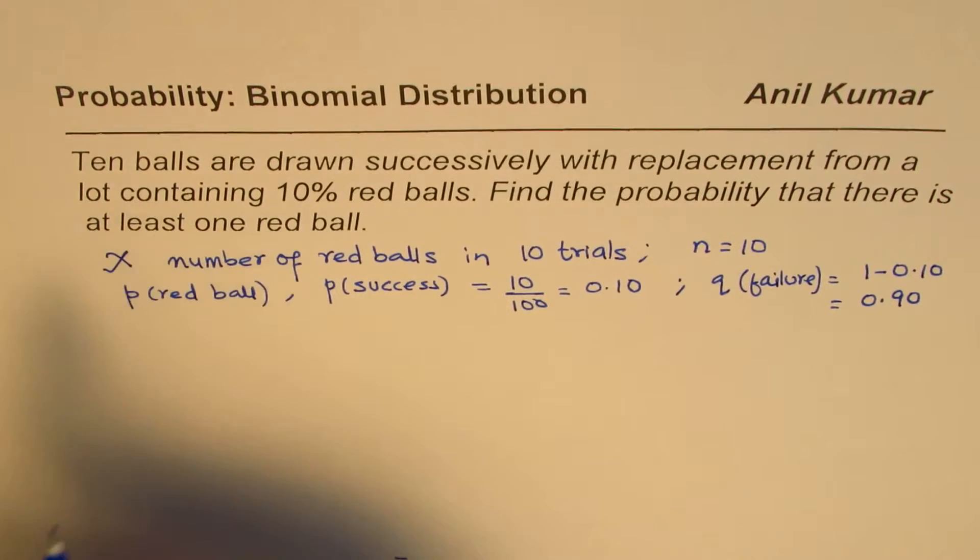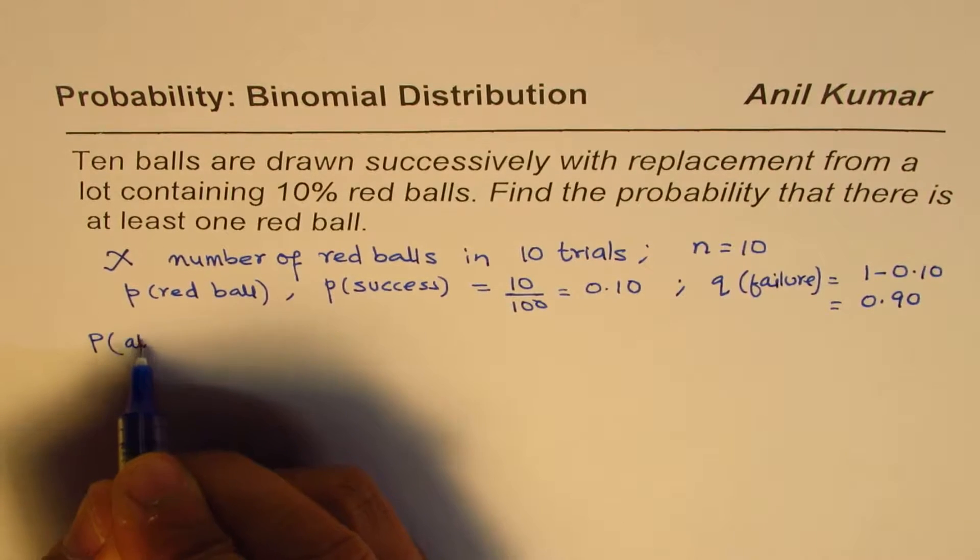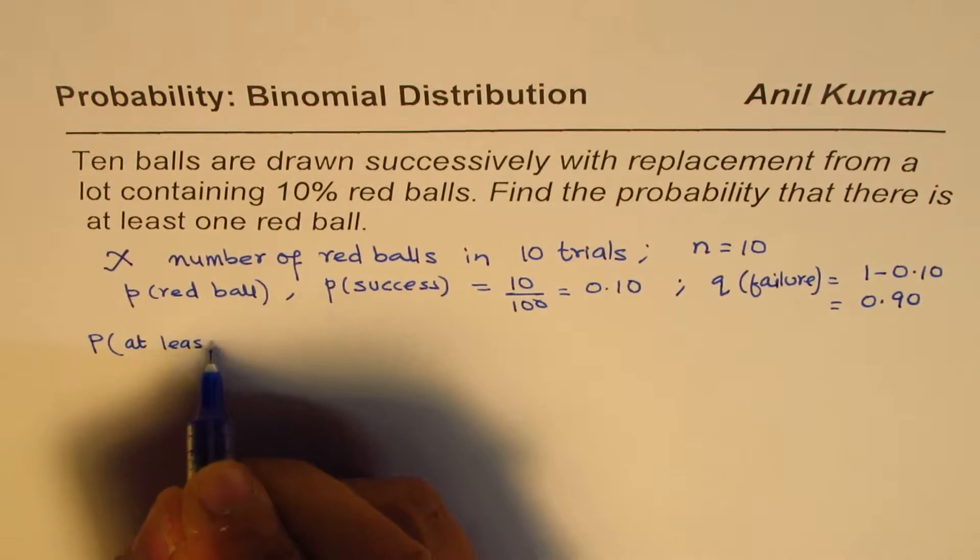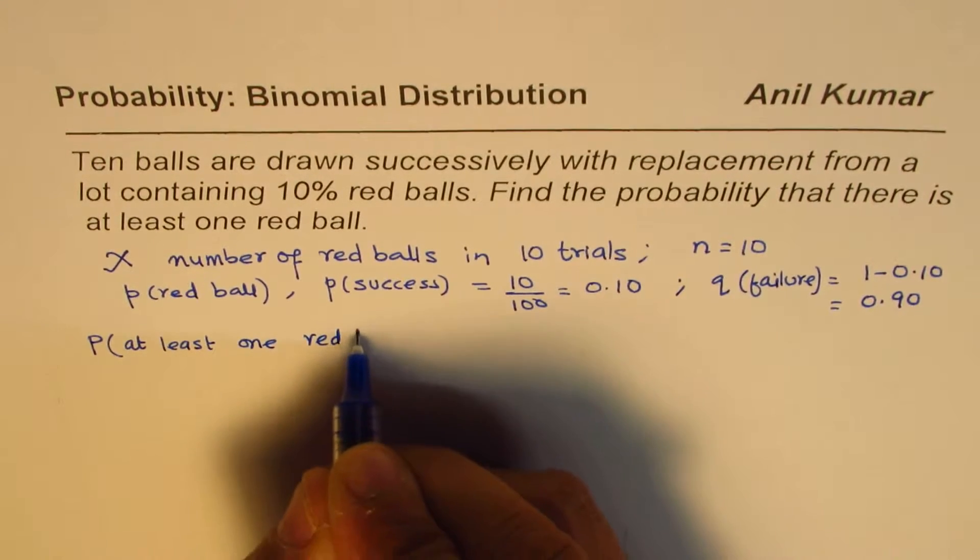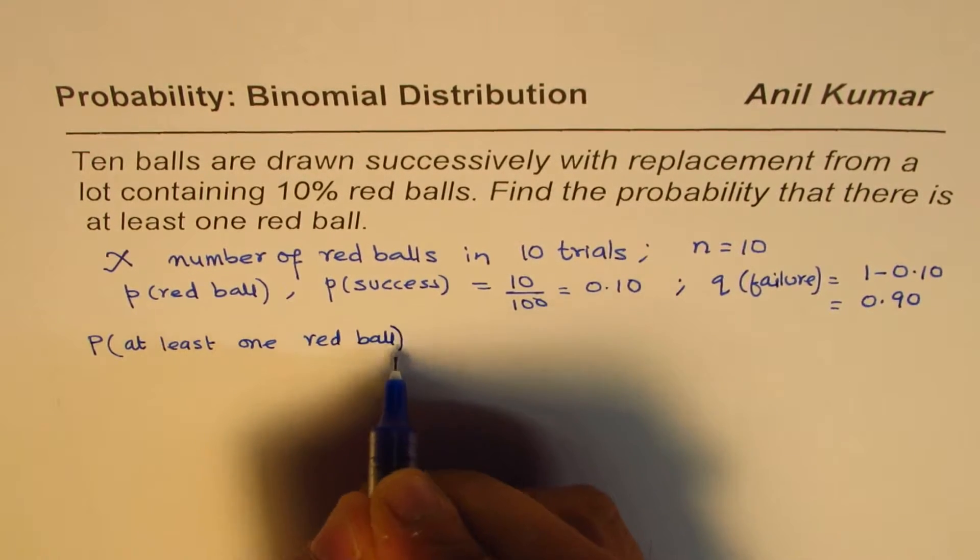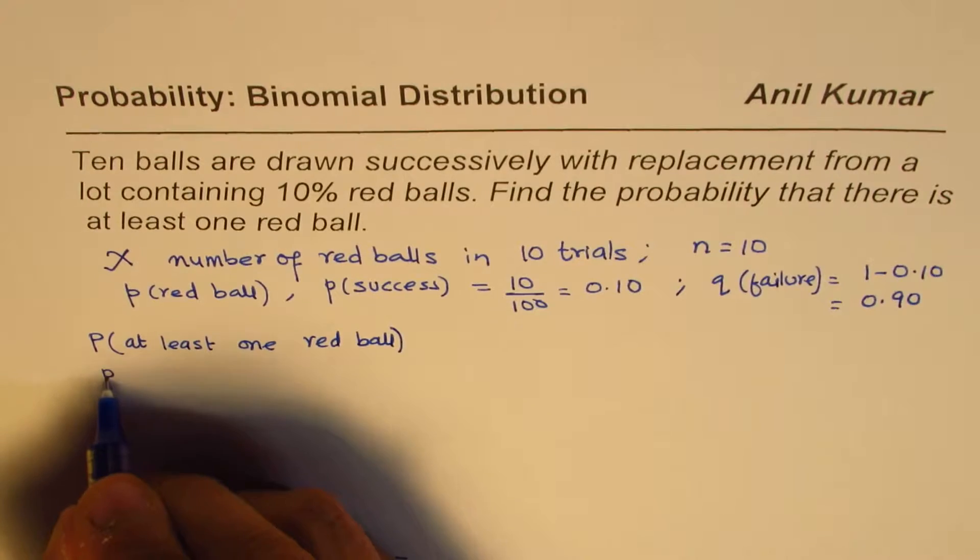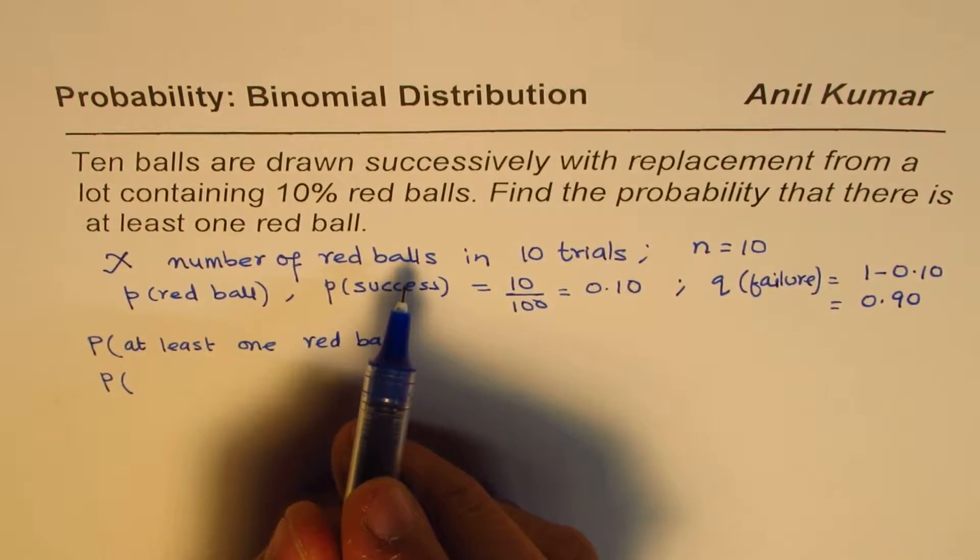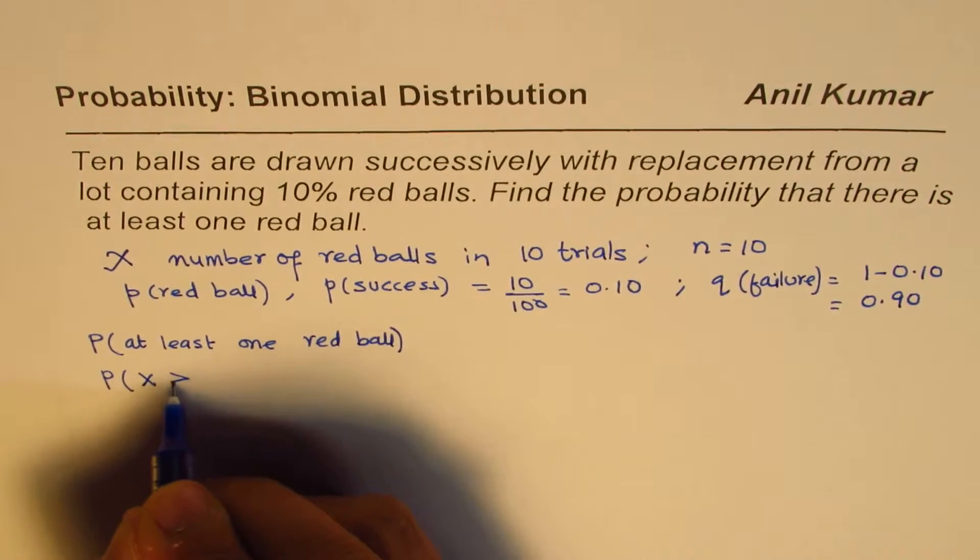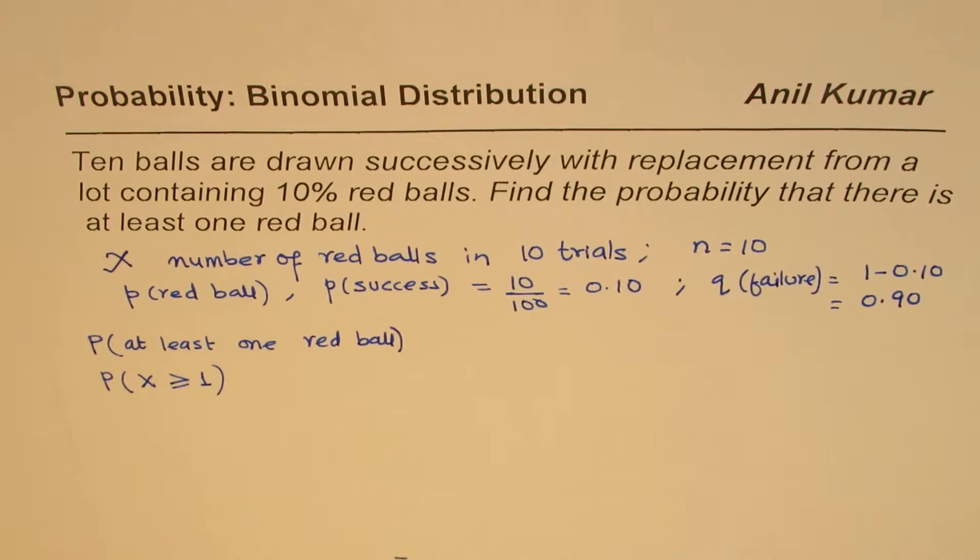So we want to now find the probability of at least one red ball. It means we want to find the probability that this parameter, which signifies the number of red balls, is greater than or equal to 1. That is what we want to find.